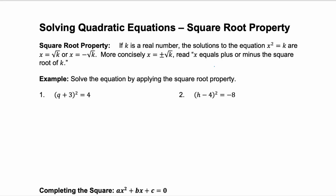The square root property tells us that if k is a real number, the solutions to the equation x squared equals k are going to be x equals the square root of k or x equals negative the square root of k. So we can have a positive or a negative, or more concisely, we use the notation x equals plus or minus the square root of k.